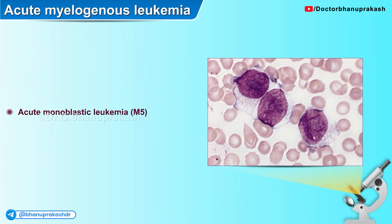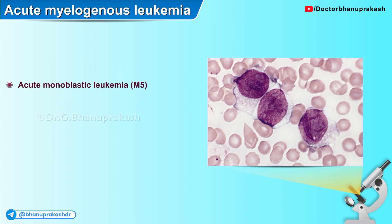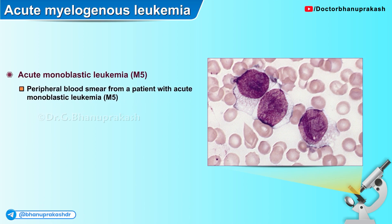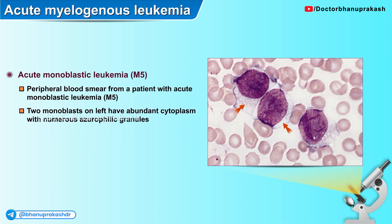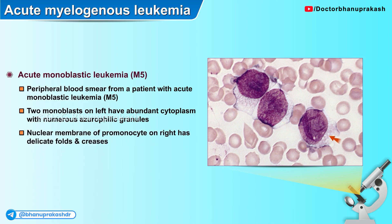Here is another histological image of a peripheral blood smear from a patient with acute monoblastic leukemia. The two monoblasts on the left have abundant cytoplasm with numerous azurophilic granules, and the nuclear membrane of the promonocyte on the right side has delicate folds and creases.